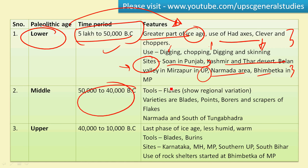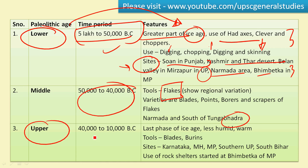The Middle Paleolithic culture thrived during 50,000 to 40,000 BC. The stone tools here include flakes of stone, showing regional variation across the country. The varieties of these flakes include blades, pointers, borers, and scrapers — these are smaller and much more refined when compared to the hand axes and cleavers. Sites of the Middle Paleolithic culture include the Narmada region and areas south of the Tungabhadra.